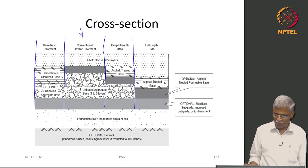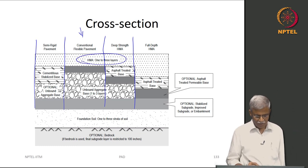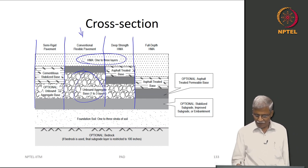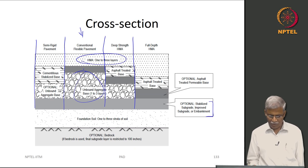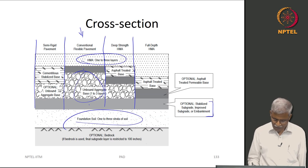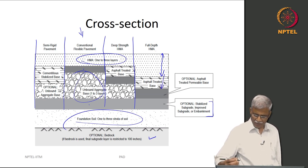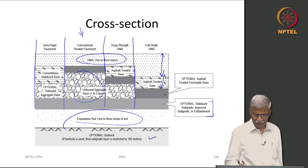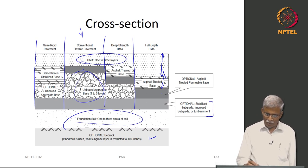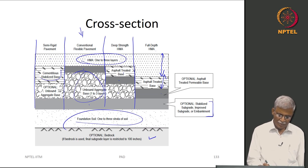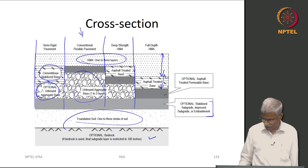Now let us look at the cross sections. For a conventional bituminous pavement you can have HMA in 1 to 3 layers, an asphalt treated permeable base, unbound aggregates in 1 to 3 layers, stabilized subgrade or improved subgrade, then foundation soil, and bedrock. For full depth pavement using the Asphalt Institute method, it is full depth HMA followed by asphalt treated base and asphalt treated permeable base. Deep strength pavement has bituminous material, asphalt treated base, asphalt treated permeable base, then granular material. Semi-rigid pavement has bituminous material, cementitious stabilized base, and unbound aggregate base.